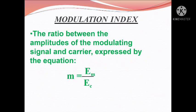Modulation index: The ratio between the amplitudes of the modulating signal and carrier is expressed by the equation M equal to Em by Ec, where Em is the maximum amplitude of the message signal and Ec is the amplitude of the carrier signal.